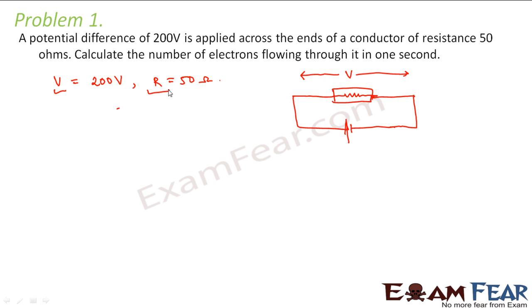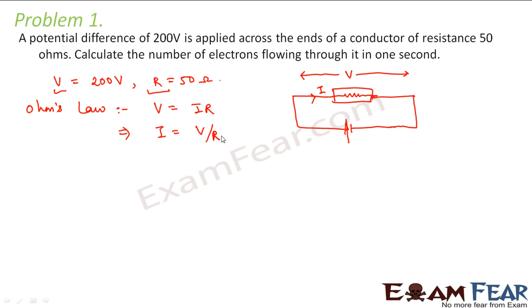Using these data we can calculate the amount of current which will flow through the conductor. Using Ohm's law, V is equal to IR. So from this we can calculate the current: V divided by R, which is equal to 200 divided by 50, that is 4 amperes. That means 4 amperes of current will flow through this conductor.